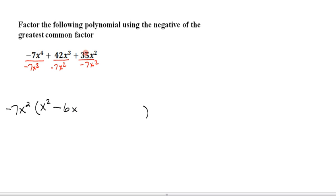And then the last term, a positive 35 divided by a negative 7 is a negative 5. The x squared is canceled completely. So there's the result.